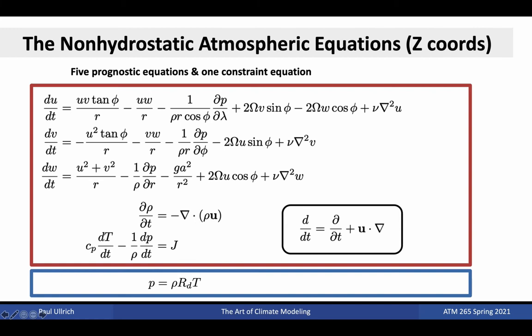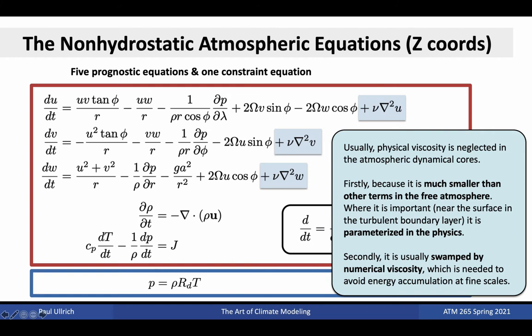The first approximation commonly employed is neglecting the physical viscosity term. This is done for two reasons. Firstly, this term is much smaller than the other terms in the free atmosphere — for large-scale mid-latitudinal flows, this term is actually nine orders of magnitude smaller than the pressure gradient and Coriolis terms that support geostrophic balance. Secondly, this term tends to be swamped by the artificial or numerical viscosity added to stabilize the solution. It's been said that if the numerical viscosity coefficient typically employed in atmospheric models were interpreted as a physical coefficient, it would mean the atmosphere was more analogous to oil than to air.